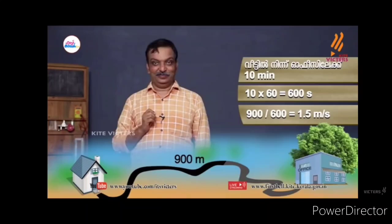How far is it? 6.5 meters per second. It is 600 divided by 1.5 meters per second.